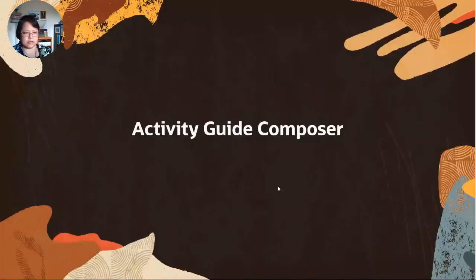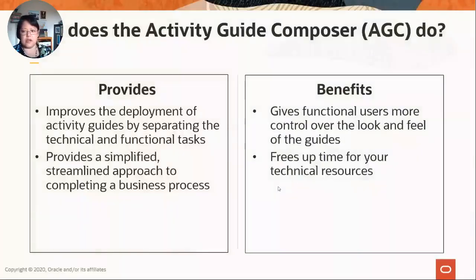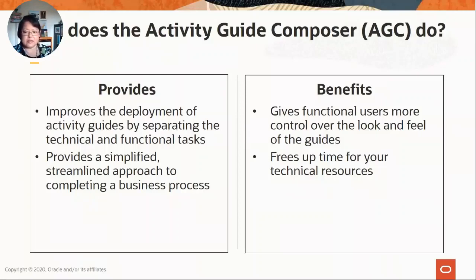The first framework is the Activity Guide Composer. There is an Activity Guide in PeopleTools, which the Activity Guide Composer is actually built on. What the Activity Guide Composer gives you is a simpler way of building activity guide templates by splitting up the technical and functional tasks. It improves deployment of activity guides because it frees up your technical resources — once they do the basic configuration of the category, your functional people can go in and create templates.